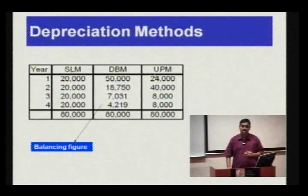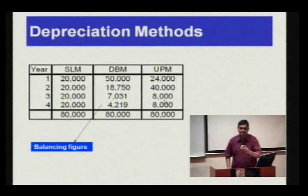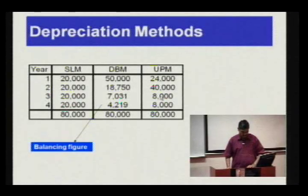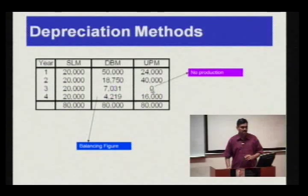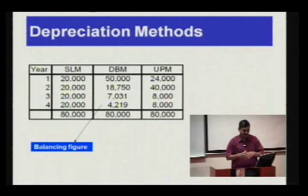Under the units of production method, the depreciation will replicate the amount of production made. For example, if the production changes, the depreciation will change. If there is no production in the third year, then there will be no depreciation in that year. So depreciation can be on SLM, diminishing balance, or units of production.